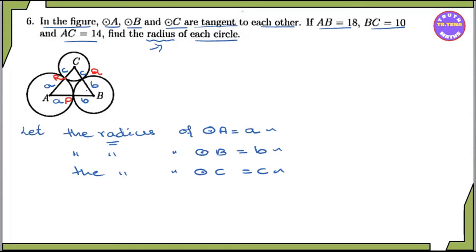The first equation: AB equals small a plus small b, and AB equals 18. So equation 1 is: a plus b equals 18.